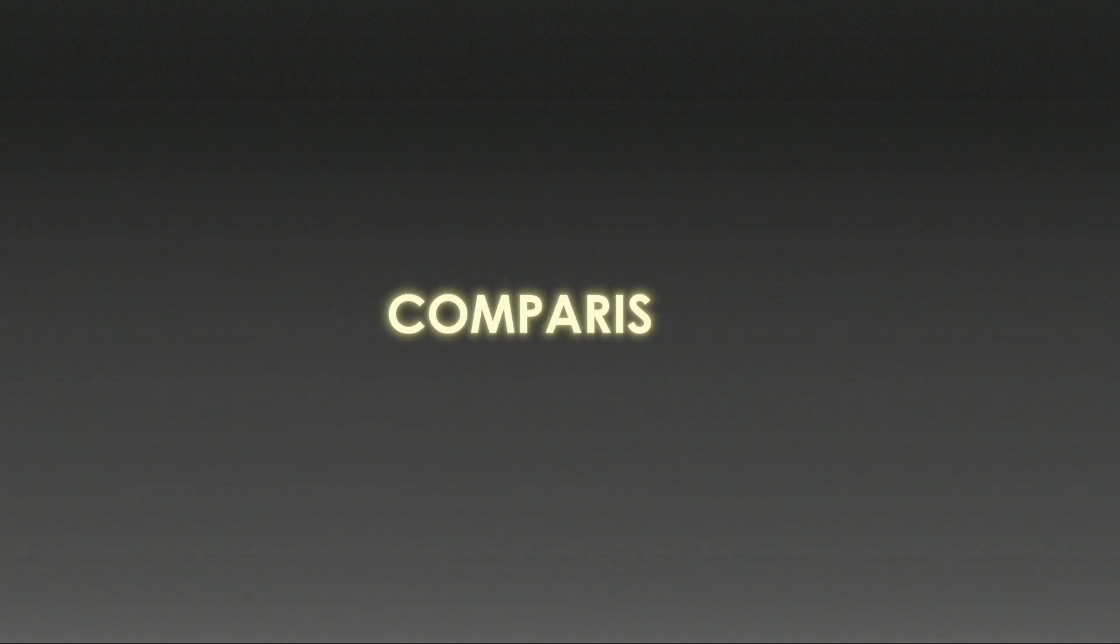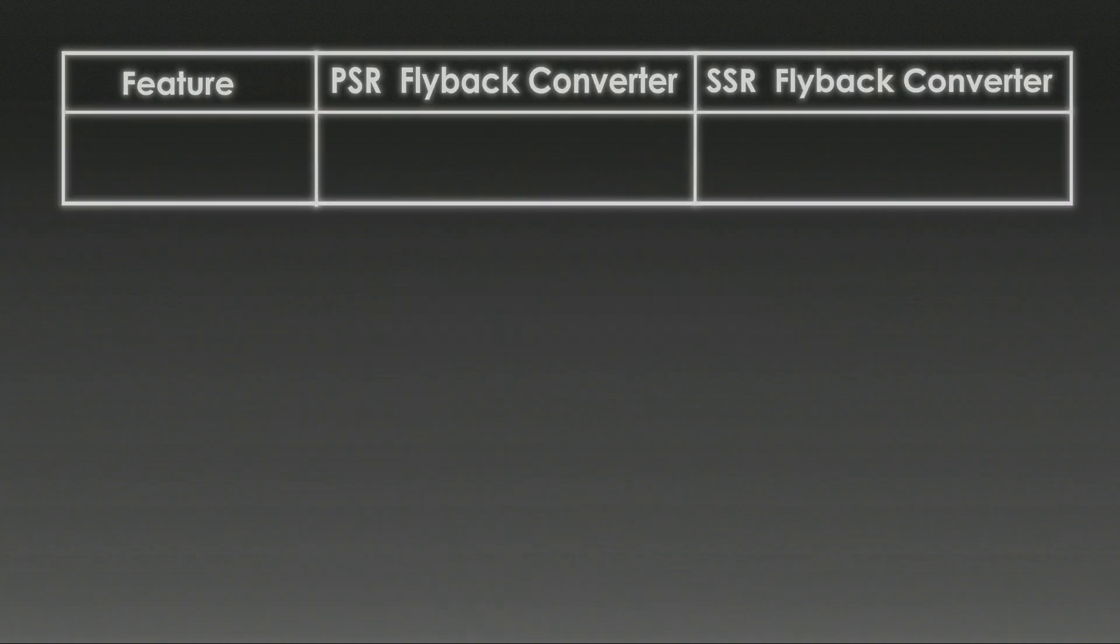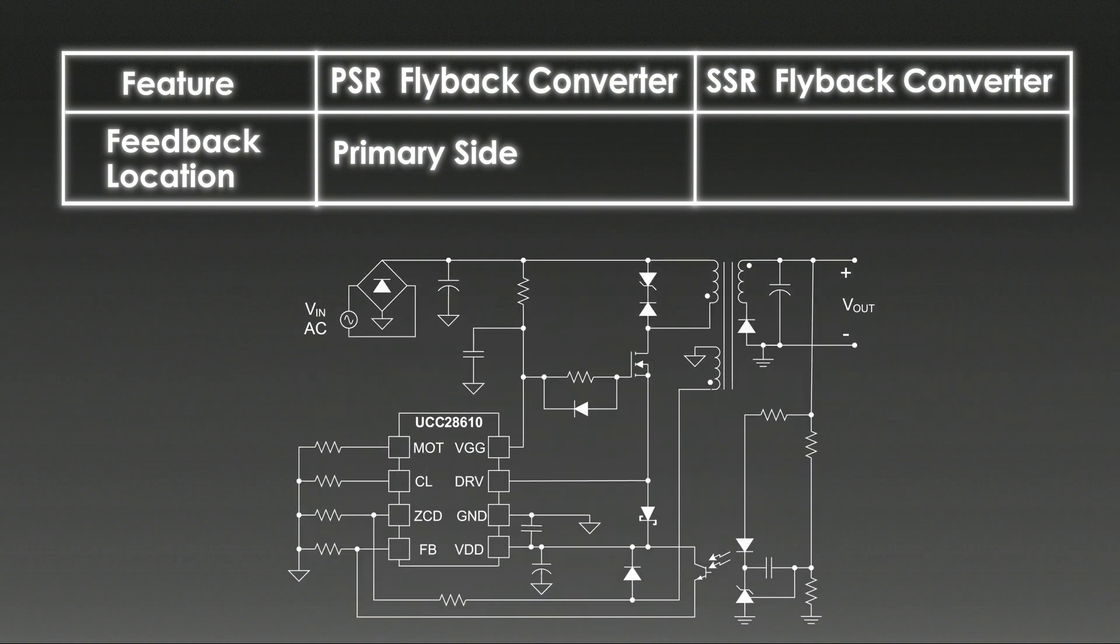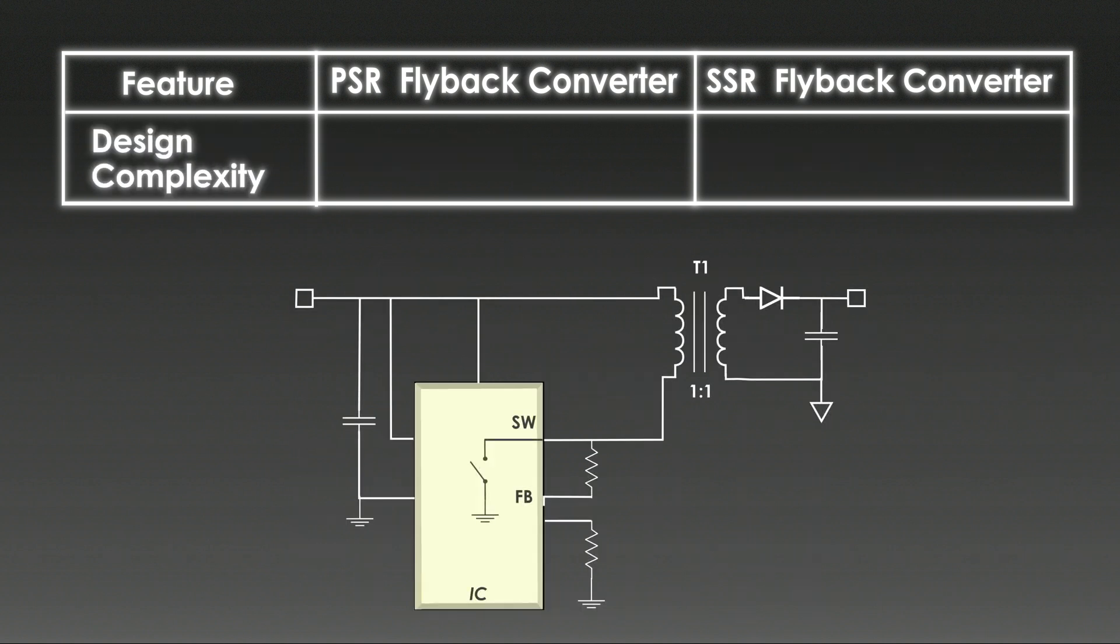Let's compare primary side regulation and secondary side regulation flyback converters. The regulation of the PSR flyback converter is handled entirely from the primary side of the transformer. The IC measures the voltage on the transformer's primary winding during the off cycle to regulate the output voltage. No optocoupler or secondary side feedback components are required. The regulation in the SSR flyback converter is performed on the secondary side of the transformer. A feedback circuit on the secondary side directly measures the output voltage. This information is sent to the primary side using an optocoupler or similar isolation mechanism. The PSR flyback converter has simpler design which has no optocoupler or secondary side circuit.